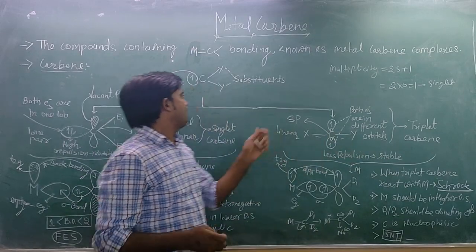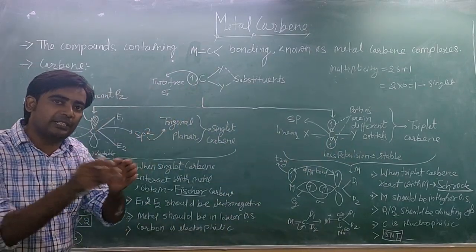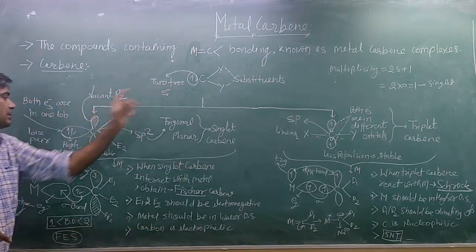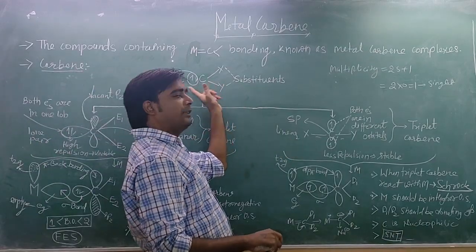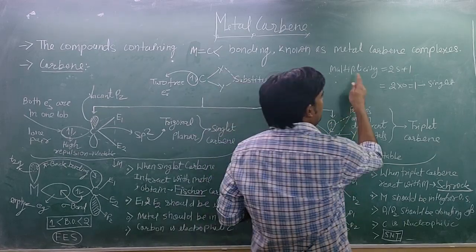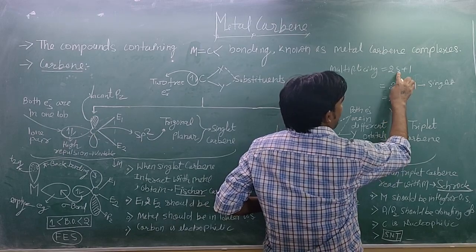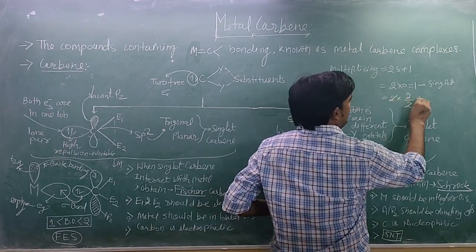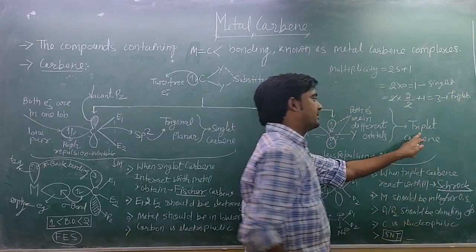In this case, when the two electrons are present in different orbitals — not a single orbital — there are two unpaired electrons. According to multiplicity, S equals 2 unpaired electrons divided by 2, giving S=1, so multiplicity equals 2×1+1 = 3. So it is triplet carbene.